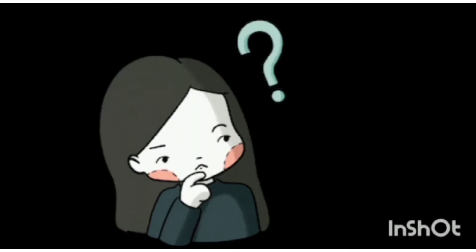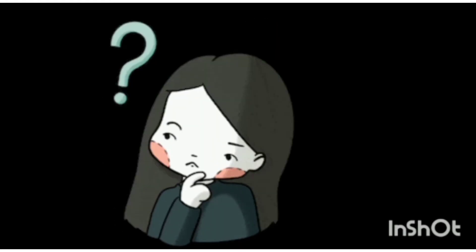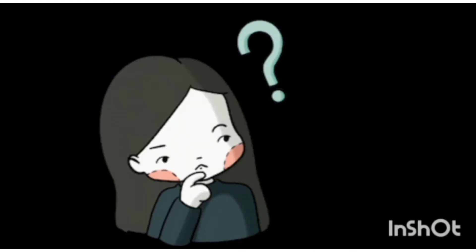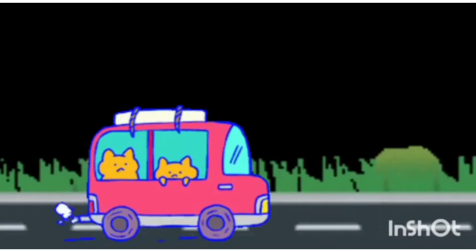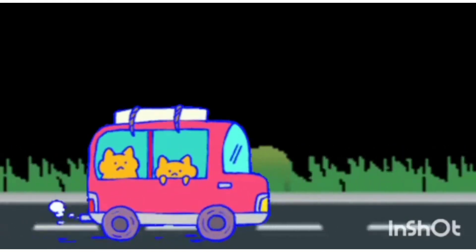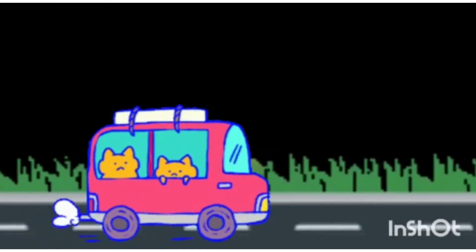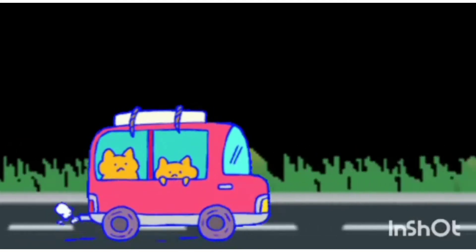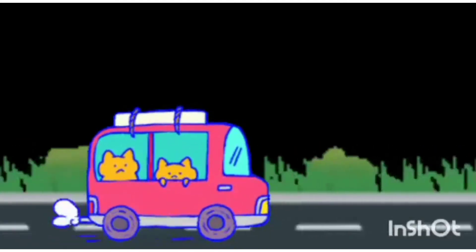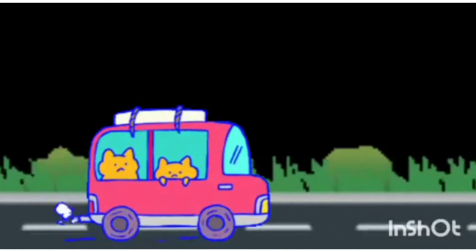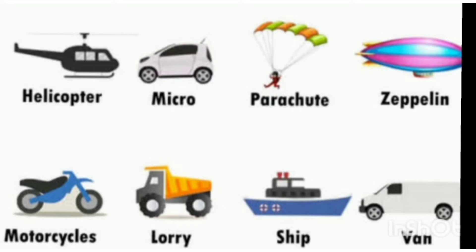So let's talk about what is transport and how do we travel. When we have to move from one place to another place, we use transport. And transport can be divided into three categories: land transport, air transport, and water transport.